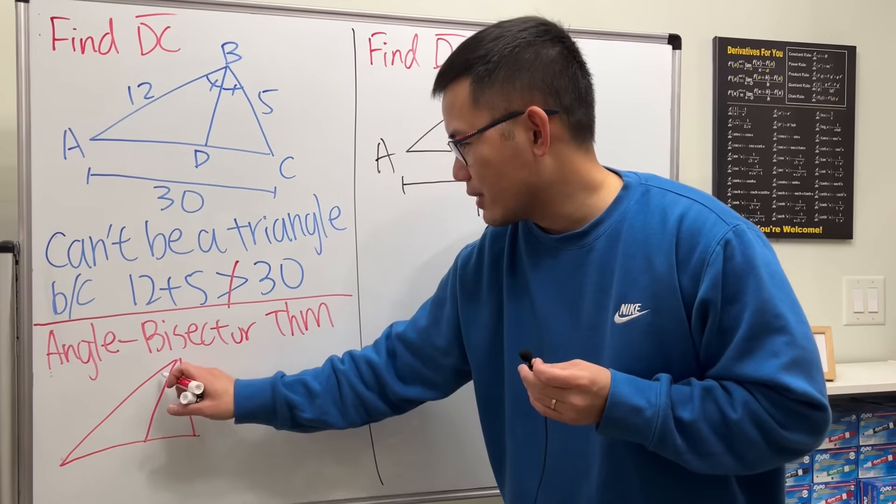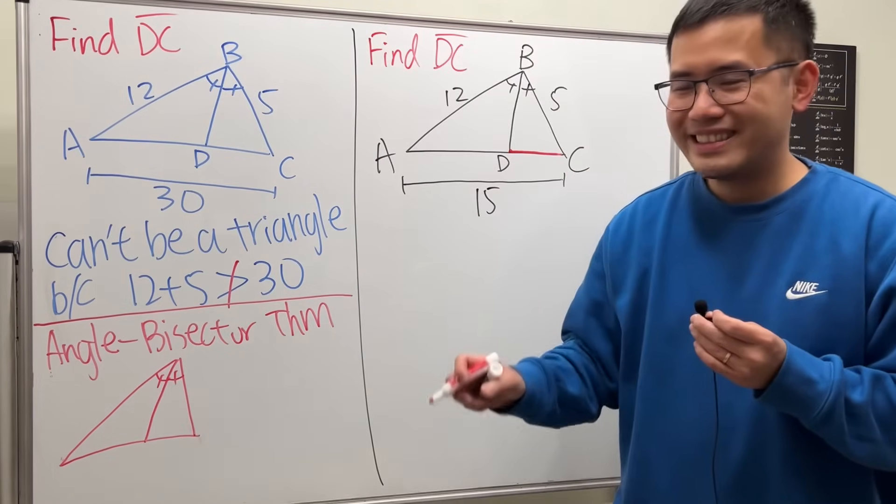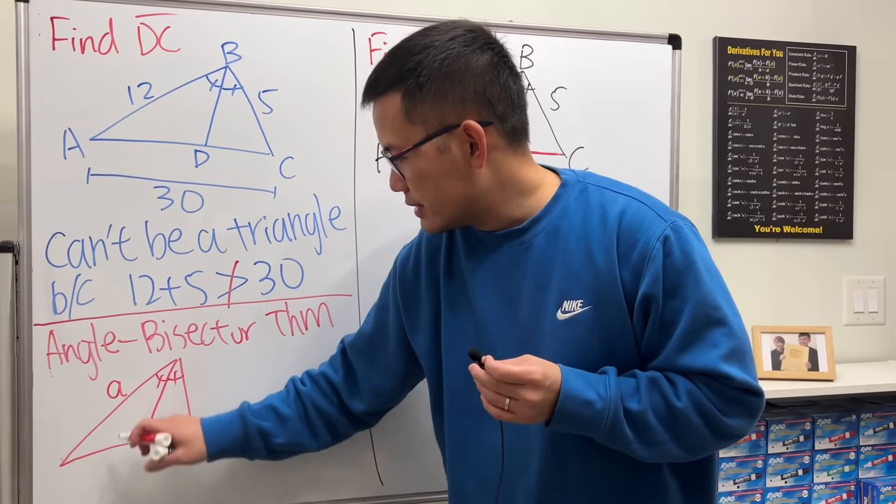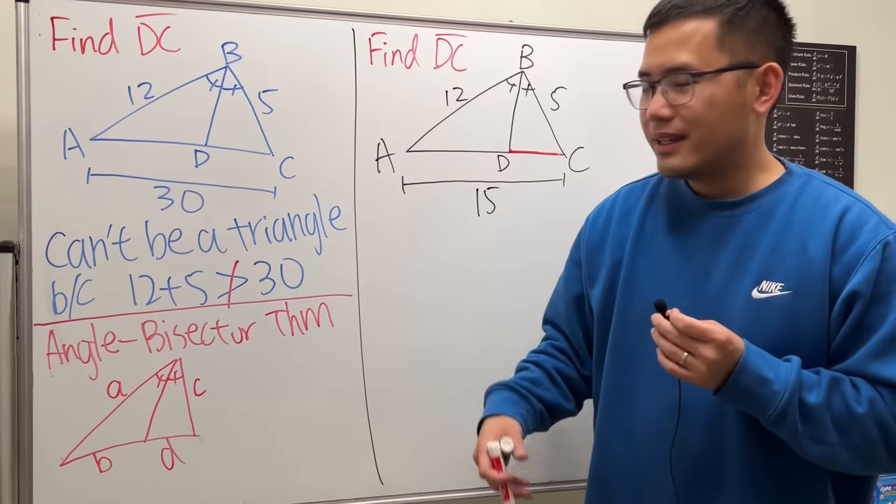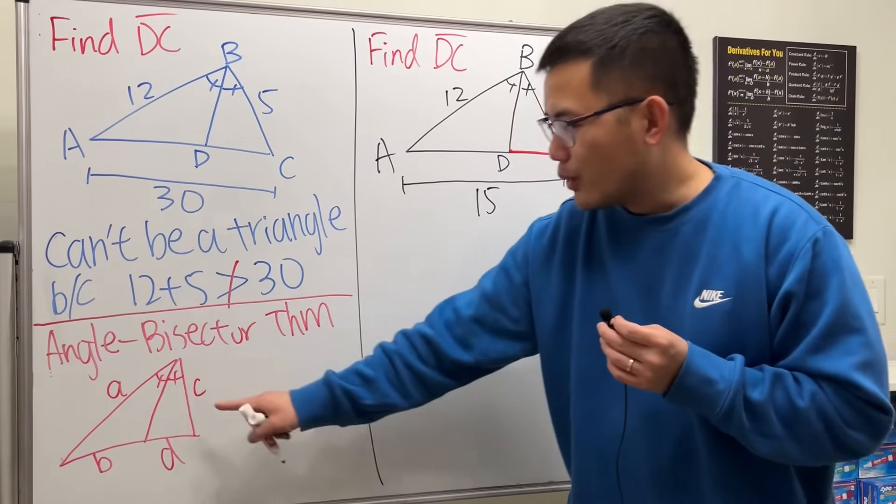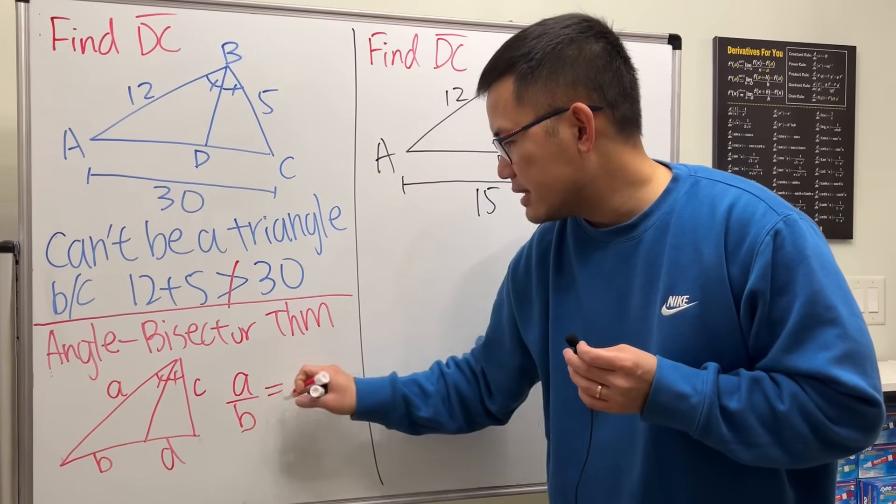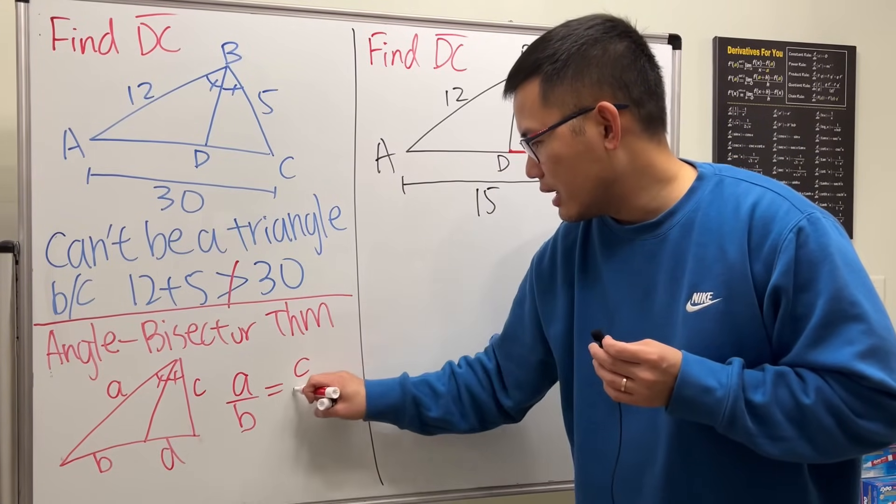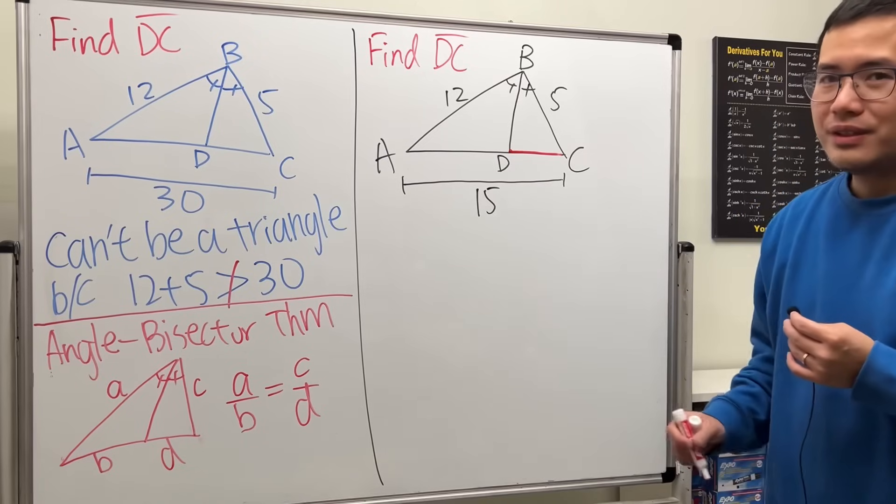Angle bisector. Let's say we have something like this, so this and that are congruent. I'm going to label this as little a, little b, just the sides, and this is little c, little d. Angle bisector theorem says when we do a over b, we must get c over d. Very nice, huh? So with that being said, we can solve this pretty easily.